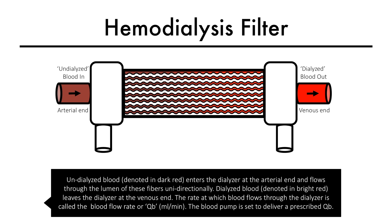Undialyzed blood, denoted in dark red, enters the dialyzer at the arterial end and flows through the lumen of these fibers unidirectionally. Dialyzed blood, denoted in bright red, leaves the dialyzer at the venous end. The rate at which blood flows through the dialyzer is also called the blood flow rate, or Qb, in milliliters per minute.